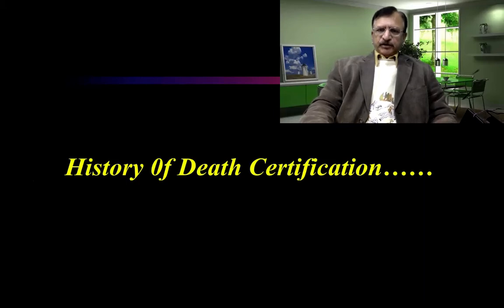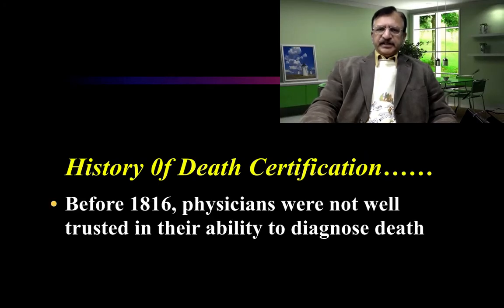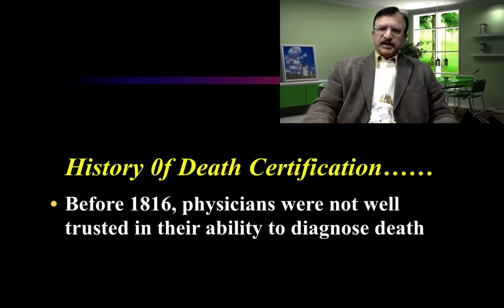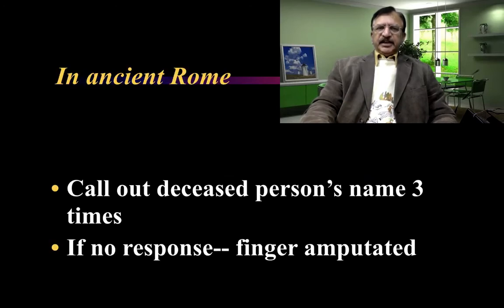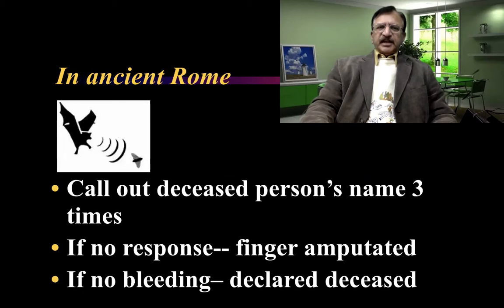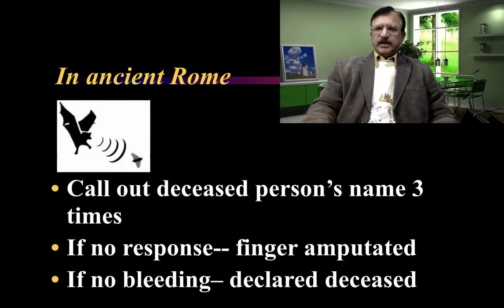A little bit about the history of death certification — it is an interesting history. Before 1816, physicians were not well trusted in their ability to diagnose death, and there was a great fear of being buried alive. In ancient Rome, a call-out phenomenon was used: they called out the deceased person's name three times. If there was no response, a finger was amputated, and if there was no bleeding, death was declared.